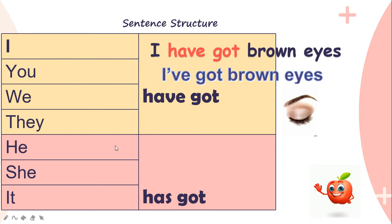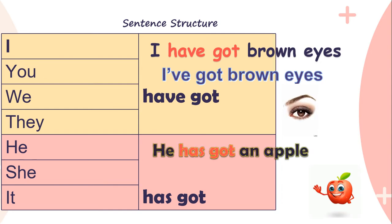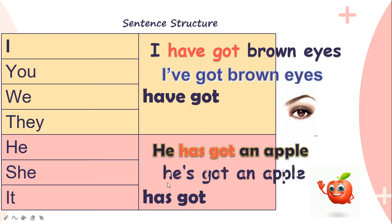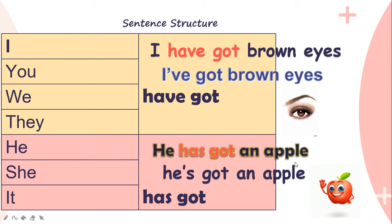For he, she, and it — singular pronouns — we will use 'has got'. For example: 'he has got an apple', or the short form 'he's got an apple' — both are accepted. 'It' refers to non-living things, so whenever you see a cat or a plant, you may use 'it'.